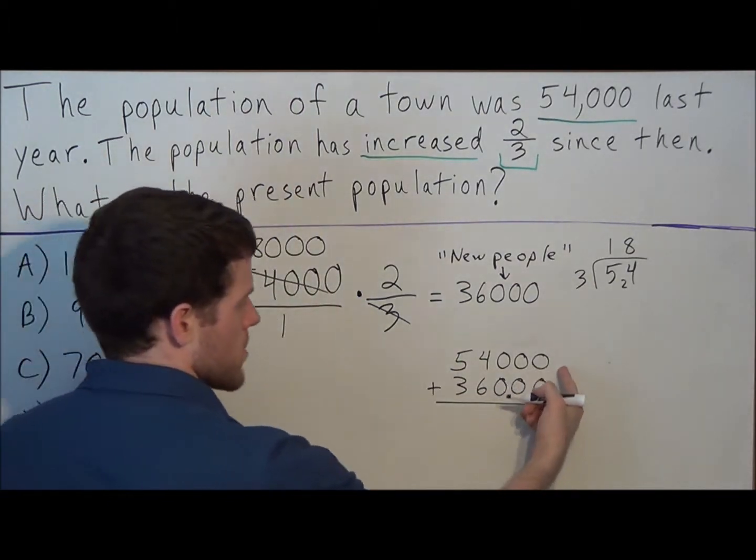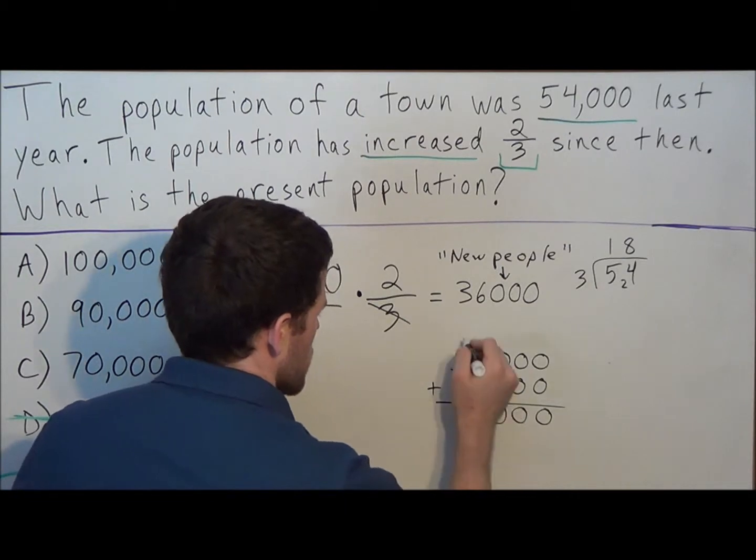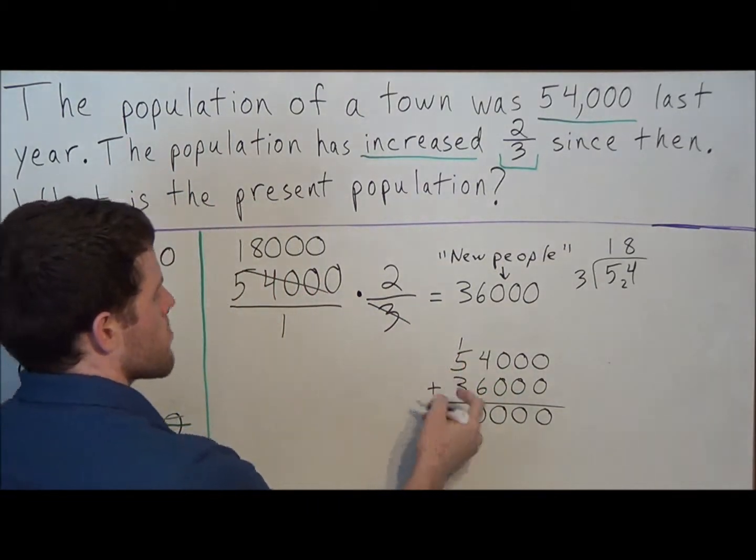So now what we're doing, we have 0 plus 0 is 0. Once again, 0 plus 0, 0 plus 0. 4 plus 6 is 10, so we carry the 1. 1 plus 5 plus 3 is 9.